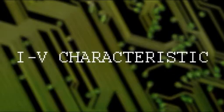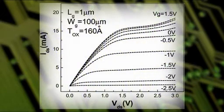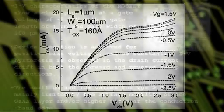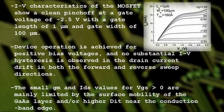I-V characteristics of the MOSFET show a clean pinch-off at a gate voltage of minus 2.5 volts, with a gate length of 1 micrometer and gate width of 100 micrometers. Device operation is achieved for positive bias voltage, and no substantial I-V hysteresis is observed in the drain current drift in both the forward and reverse sweep directions.